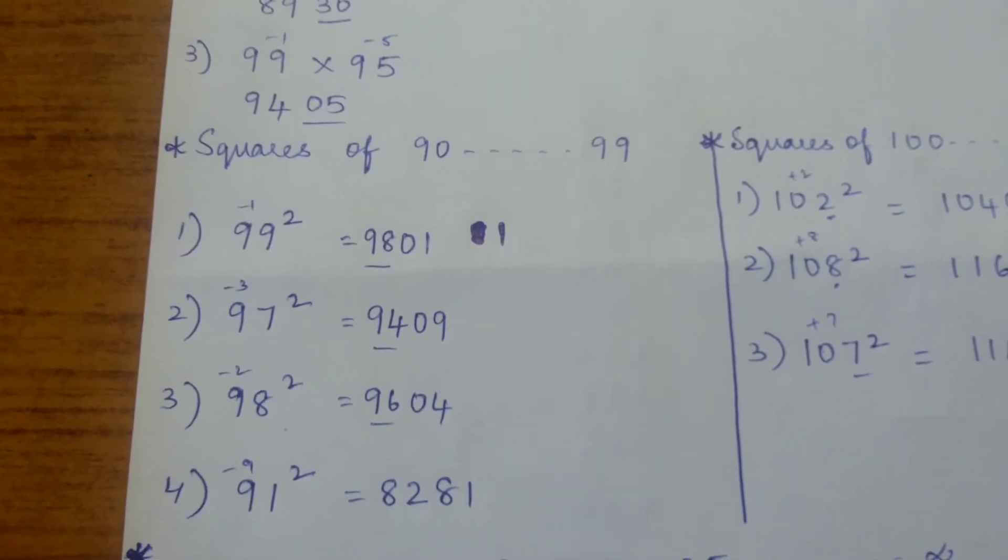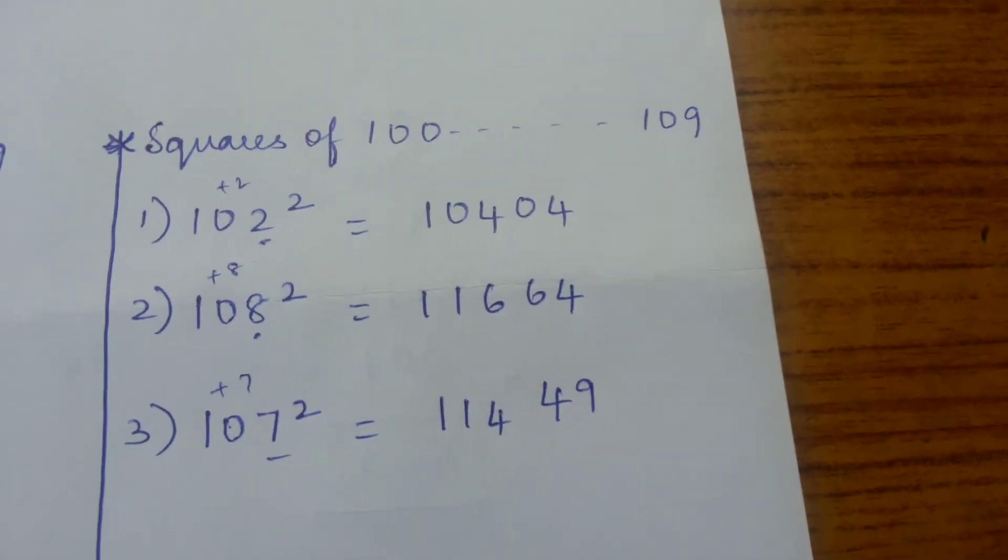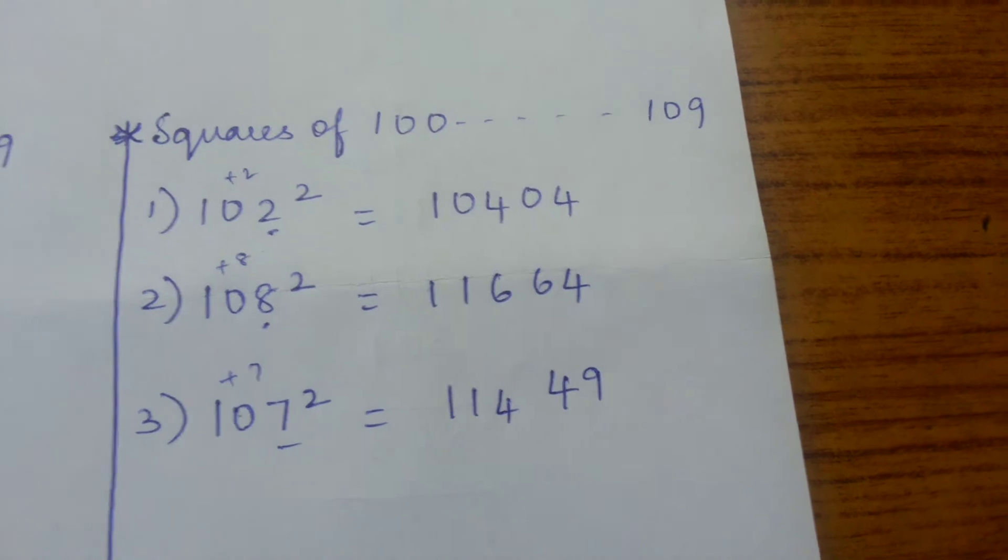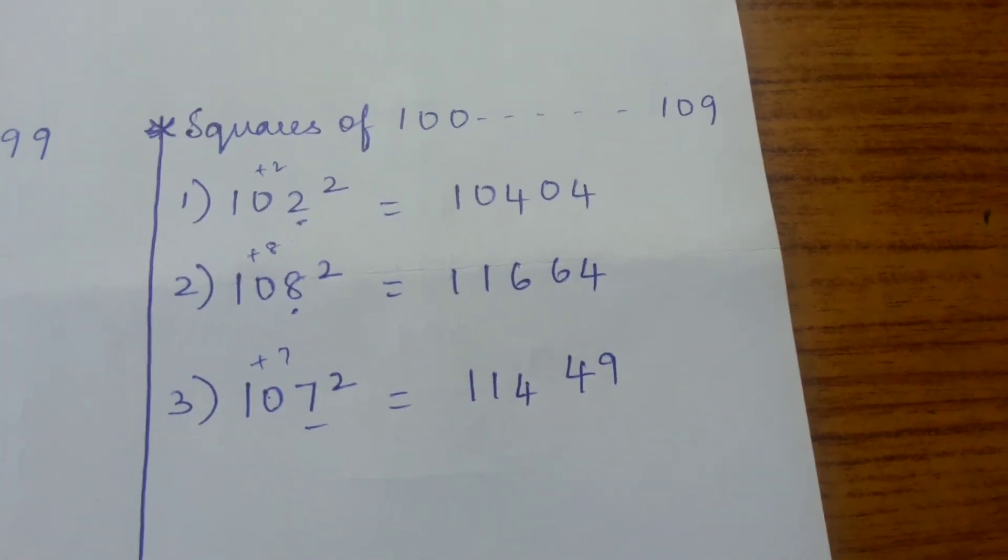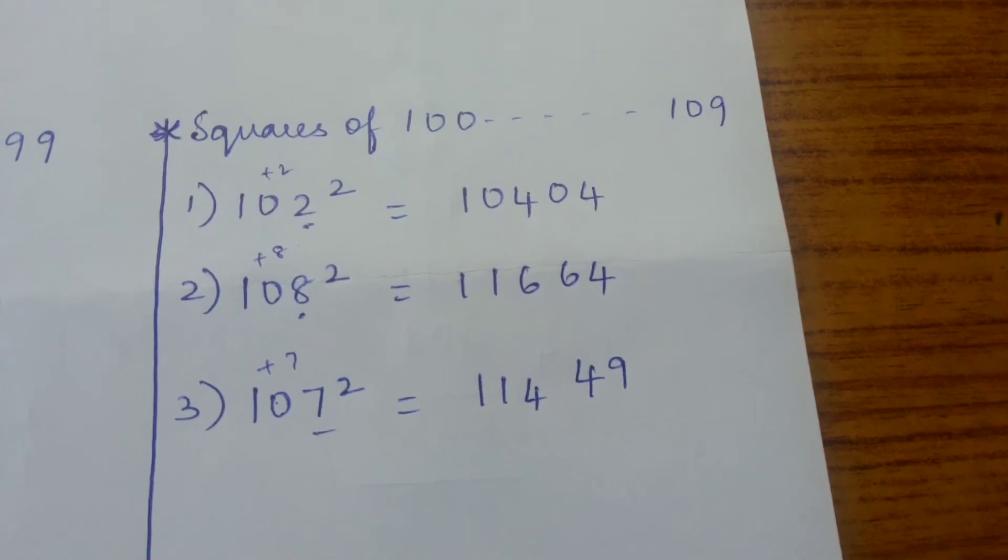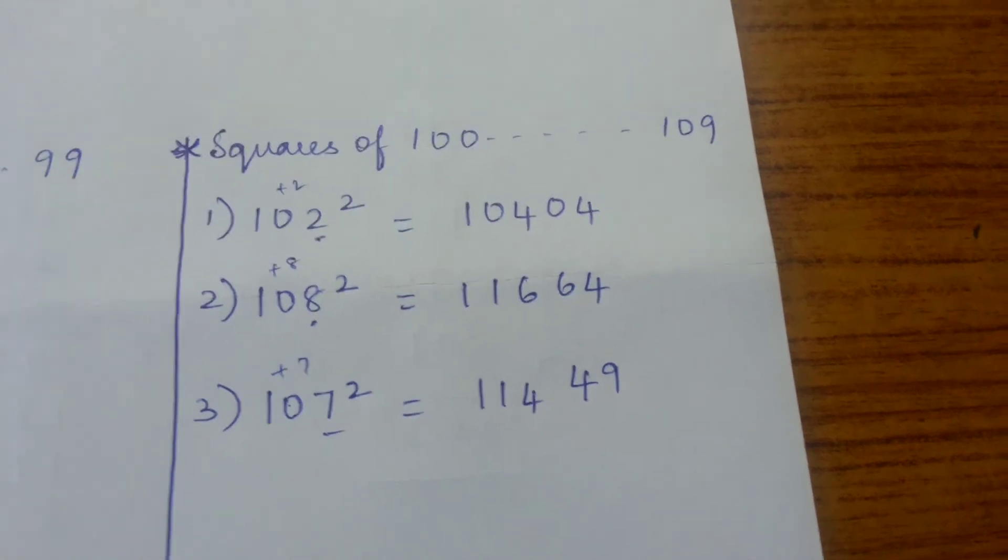Now squares of 100 to 109. 102 squared is 2 more than 100, so the last two digits will be 04 (2 squared). 108 is 8 more than 100, so the last two digits will be 64 (8 squared). 107 squared is 7 more than 100, so the last two digits will be 49.